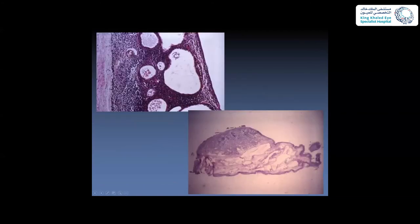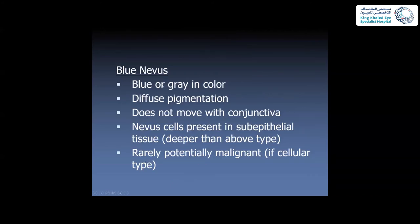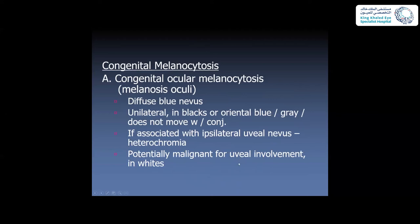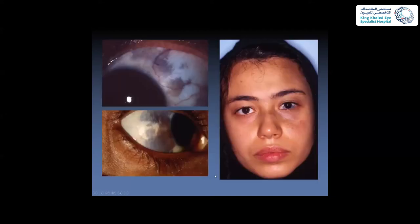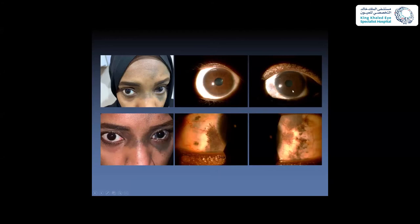Cysts present within nevi can be detected by OCT. The blue nevus is either blue or gray with diffuse pigmentation, does not move with the conjunctiva, and is present in the sub-epithelial tissue. Congenital ocular melanosis (nevus of Ota) is primary, with diffuse blue nevus, unilateral, and associated with ipsilateral uveal nevi or heterochromia. Clinical examples show the blue nevus involving skin, conjunctiva, and iris, sometimes presenting with dark irides.